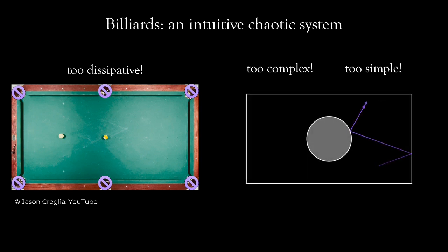But thankfully it is very easy to fix this. We will just put an immovable disk in the middle of the billiard table and everything else remains as is. Now this system is just complex enough to be chaotic and in the rest of the video it will be our model system.